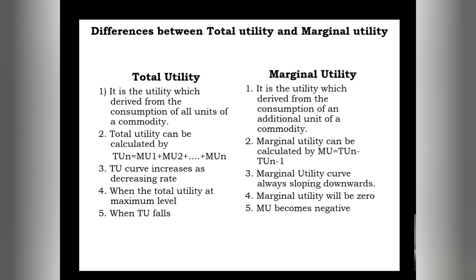Fourth difference: when total utility is at its maximum level, marginal utility becomes zero. We will see this later through the theory. Fifth, after total utility reaches a certain point and starts to fall — that is, total utility decreases — at that time marginal utility becomes negative. These are the key differences between total utility and marginal utility.